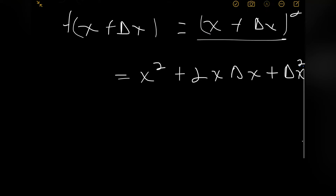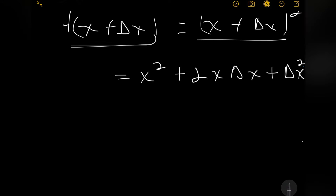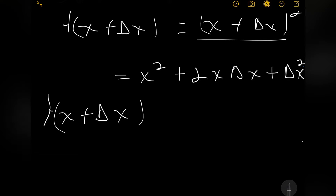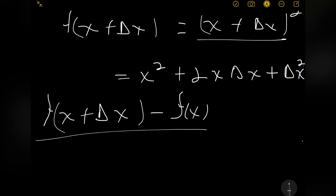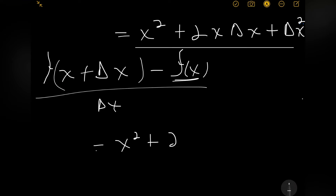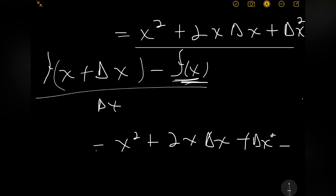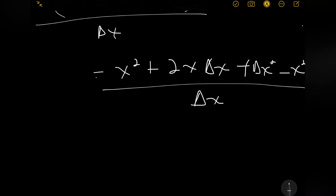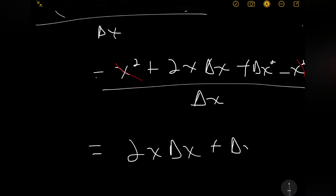Our third step, we subtract our original function from what we have here, and then we divide that by the small change. So f of x plus delta x, minus our original function f of x, divided by delta x. So we have x squared plus 2x delta x plus delta x squared, minus x squared, divided by delta x. Now we see that x squared cancels x squared, so what we're left with is 2x delta x plus delta x squared.